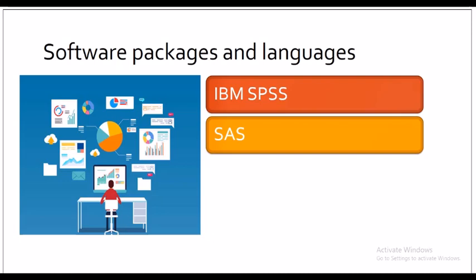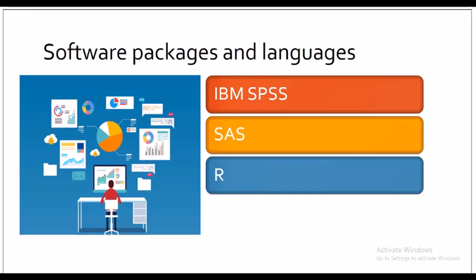Regarding packages and languages, we will do another class — here I'm just going through the introductory part. The next one is R programming. R is a programming language and a free software environment for statistical computing and graphics. R is widely used among statisticians and data miners for developing statistical software and data analysis. As of February 2020, R ranks 13th in the popularity of programming languages.